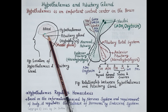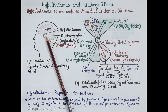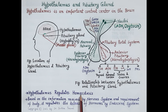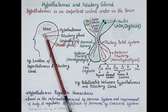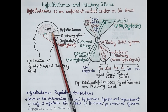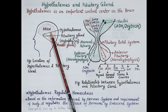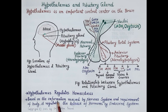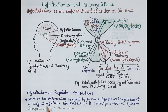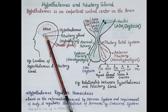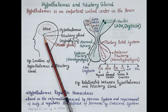Hypothalamus is an important control center in the brain. It is made up of nervous tissue. The main function of hypothalamus is to regulate homeostasis — that is, the proper balanced functioning and stability of biological processes in the body. Hypothalamus coordinates the nervous system and the endocrine system. The nervous system receives and conveys information from brain to body and vice versa, while endocrine glands release hormones. Based on the information received by the nervous system and the requirement of the body, hypothalamus regulates the release of hormones by the endocrine system.